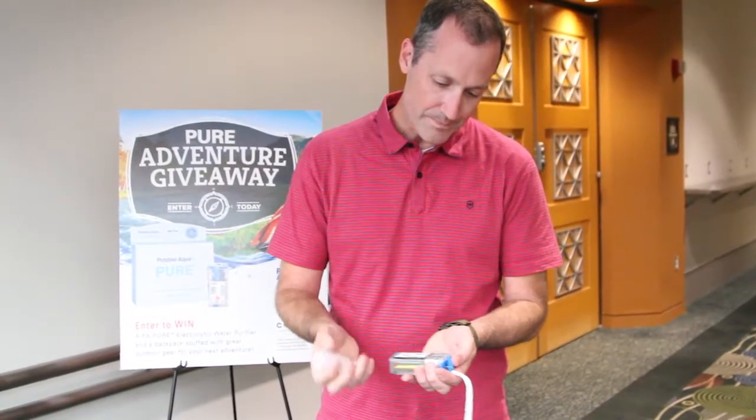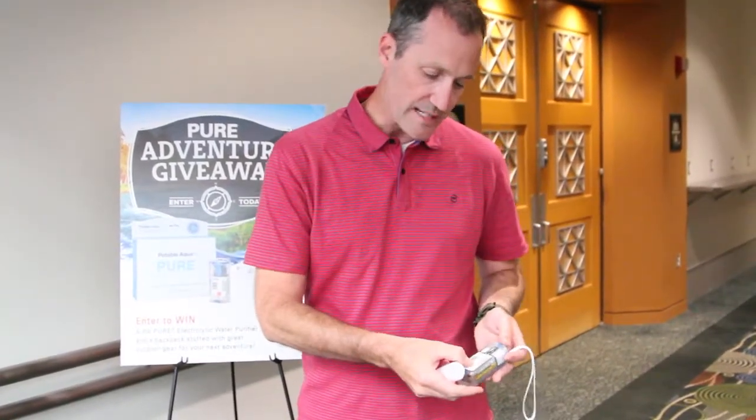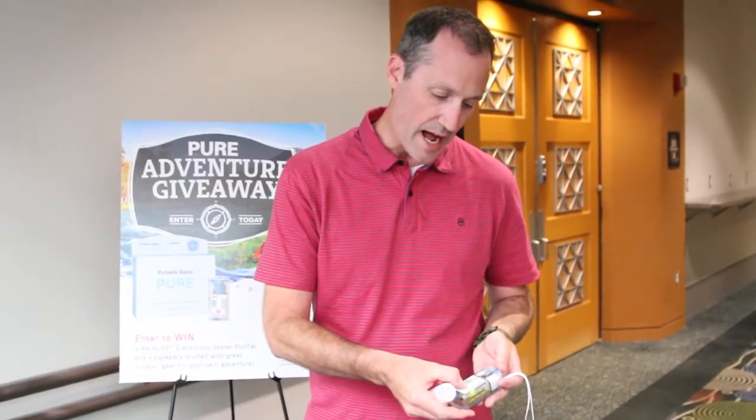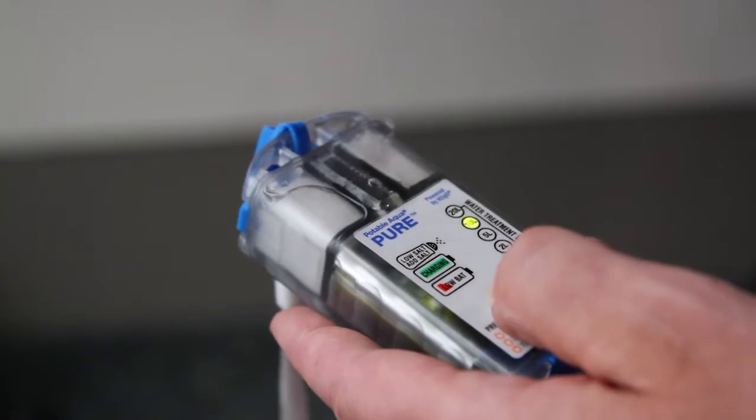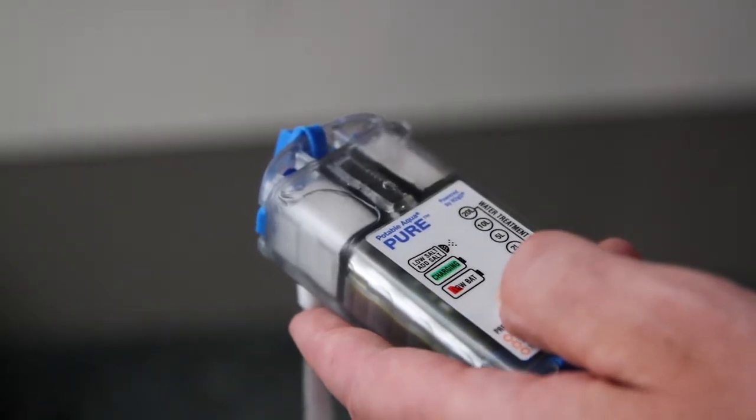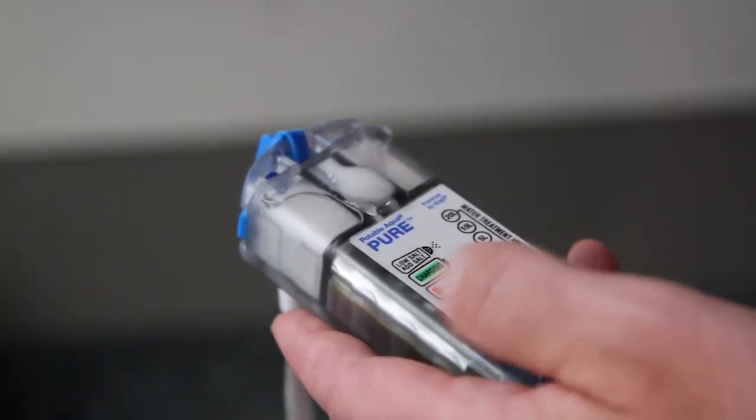You fill it up to the top and then what you do is you select how much water you want to purify. It could be anywhere between one liter to 20 liters of water. For this case I'll just do a liter and what you do is you press the button. It'll turn on.